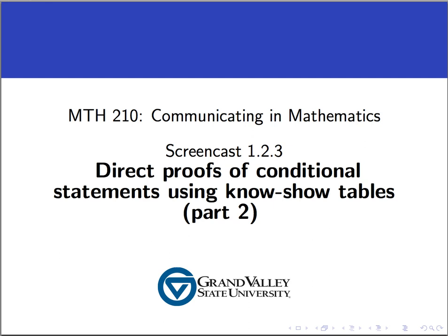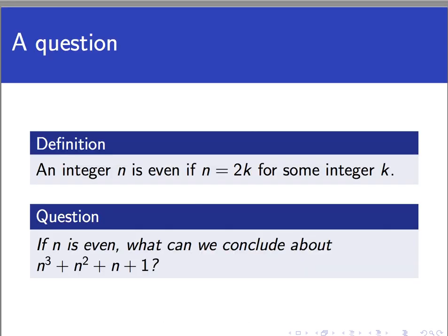In an earlier video, we defined the concept of an even number as follows. An integer n is said to be even if n is equal to 2 times k for some integer k. So take a look at the expression n cubed plus n squared plus n plus 1. I'm wondering if we know that n is even, what could we say about this expression in terms of whether it's even or odd?